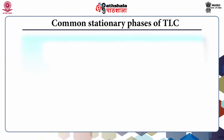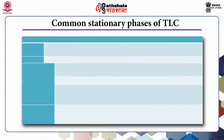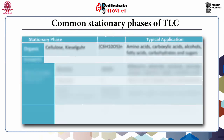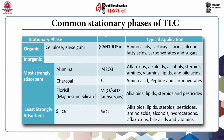The common stationary phases of TLC can be divided into two categories: organic and inorganic. In the organic category, cellulose and kieselguhr are the basic stationary phases, with typical applications including identification of amino acids, carboxylic acids, alcohols, fatty acids, carbohydrates, and sugars.